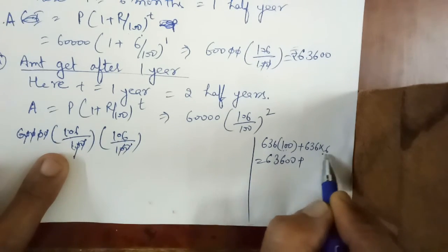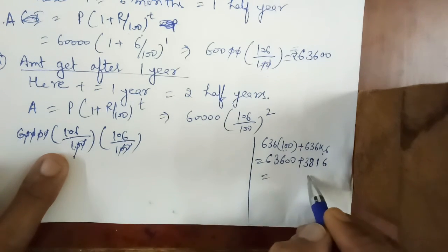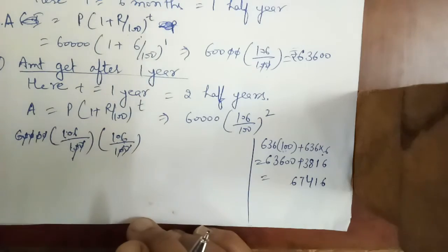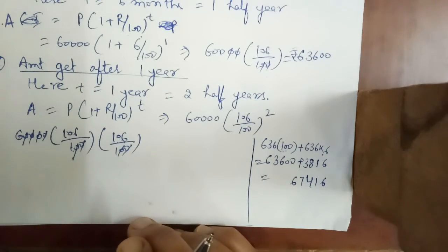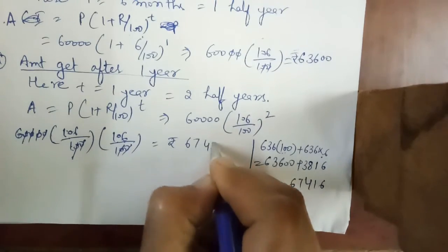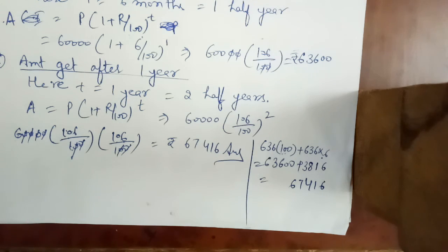The amount after 1 year is ₹67,416. According to these solutions you can try some more similar questions. If you have any doubts, except for questions 8 and 12, you can send me a message on my personal number 999-170-1313. Thank you.